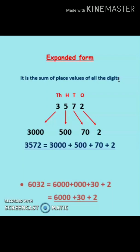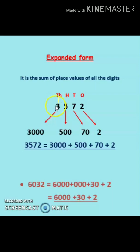Suppose we are given the number 3572. First, always write ones, tens, hundreds, and thousands on the top. After that, write down the place value of all the digits. Starting with three — the place value of three is three thousand because it is under the thousands place. So the place value of three is three thousand.